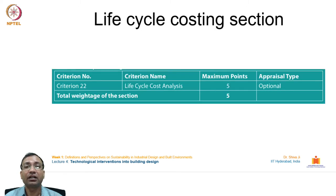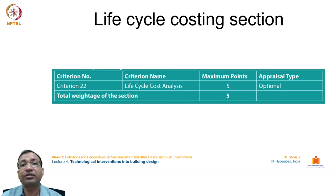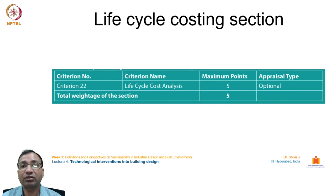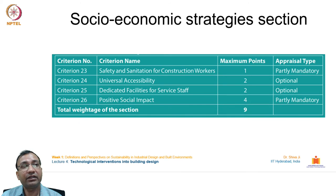The life cycle costing section emphasizes life cycle assessment (LCA) analysis to evaluate the impact of products and components used in the building industry. High-impact materials are discouraged through this analytical tool, which helps understand embodied energy and the overall environmental impact a product exerts over its lifetime.